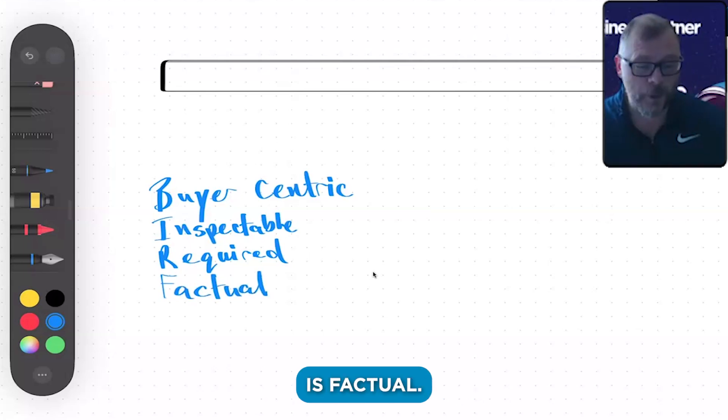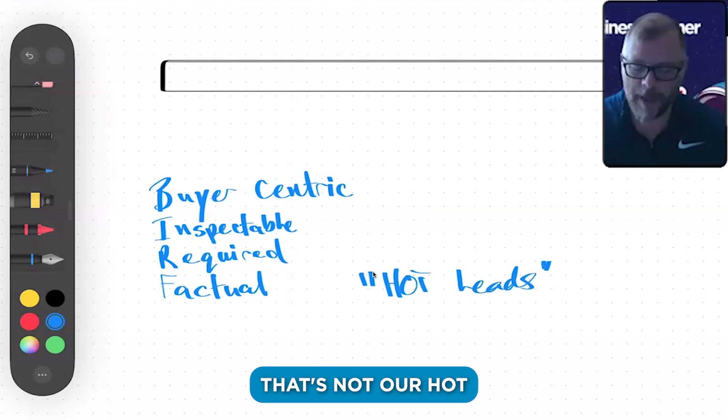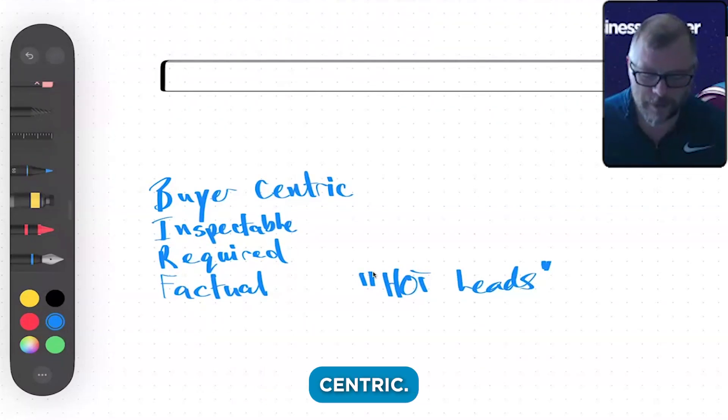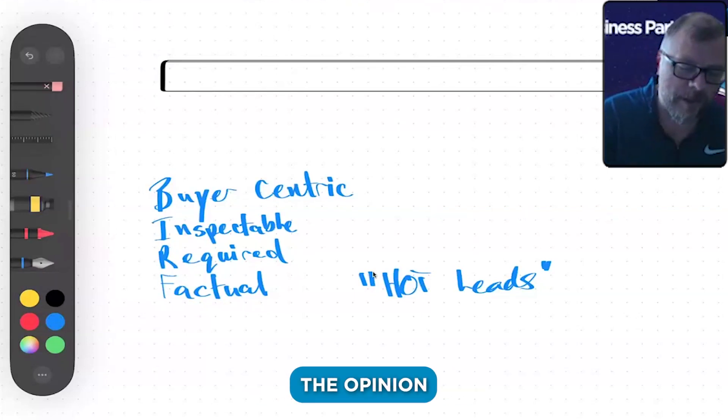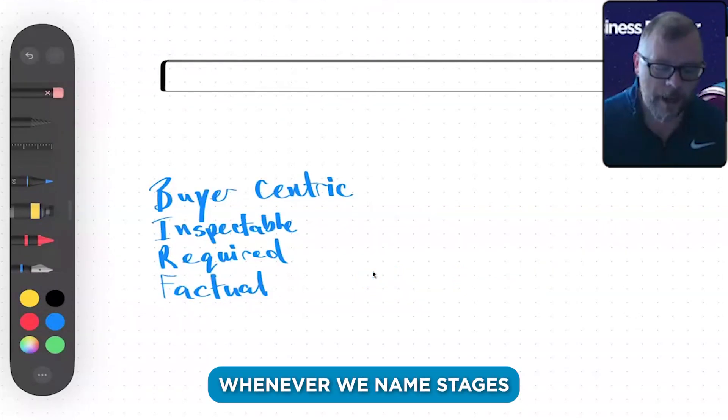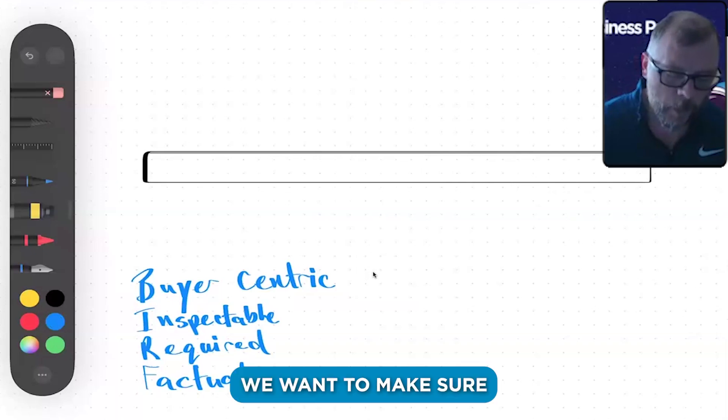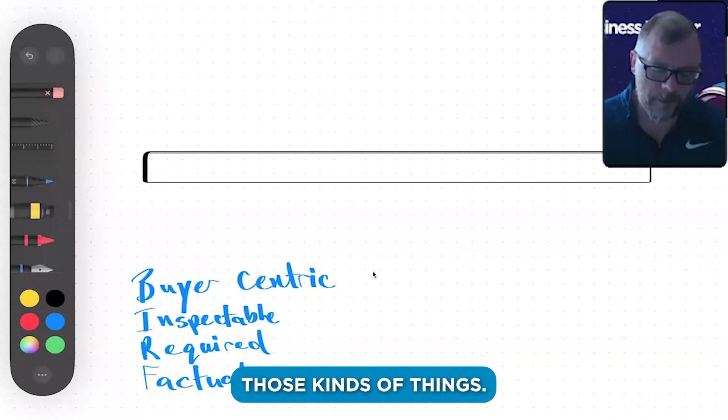The other one is factual. So 'hot leads' or 'hot deals,' that's not a buyer's journey stage. It's not customer-centric, and it's not really factual. It's anecdotal, it's based on the opinion of a sales guy. Whenever we name stages in a CRM, we want to make sure it matches those kinds of things.